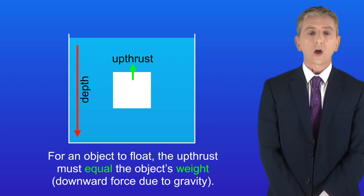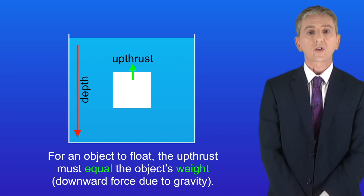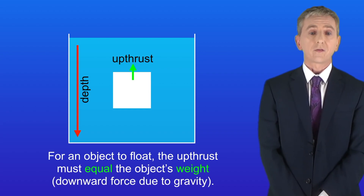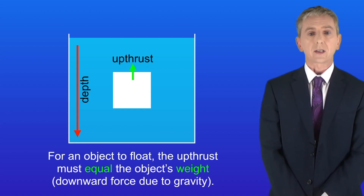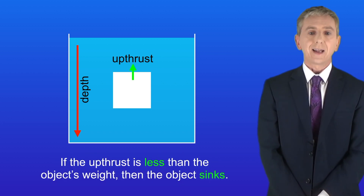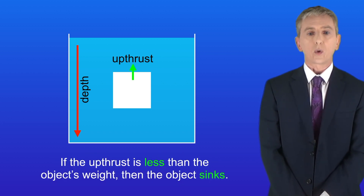For an object to float, the upthrust must equal the object's weight — in other words the downward force due to gravity. If the upthrust is less than the object's weight, then the object sinks.